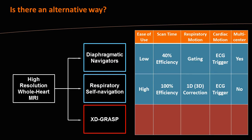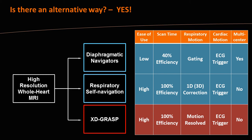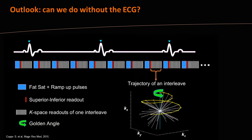To answer our question: yes, there is an alternative way. We use XD-GRASP to resolve the motion, maintaining high ease of use and high efficiency, without needing prior knowledge of the underlying respiratory motion pattern. Cardiac motion is still handled with ECG triggering, and there are no multi-center trials yet — but should we stop here? Cardiac motion remains a problem.